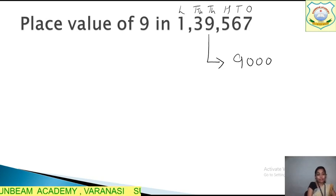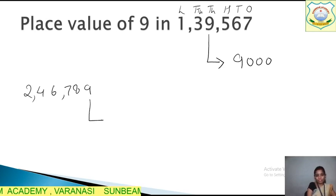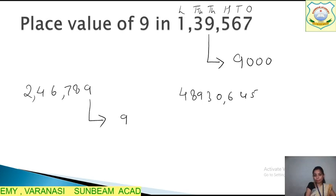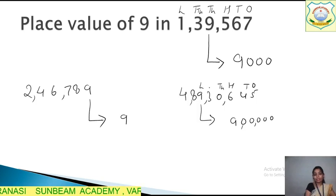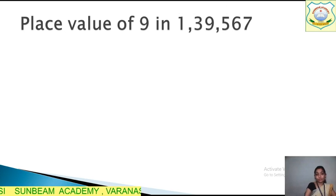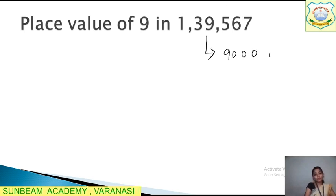For example, if we have the number 2,4,6,7,8,9, what will be the place value of 9 here? It's in the 1s place, so the value is 9. For another example, 4,8,9,3,0,6,4,5, what is the place value of 9 here? 9,00,000 - it's 9 lakh. This type of question can come in your exam.